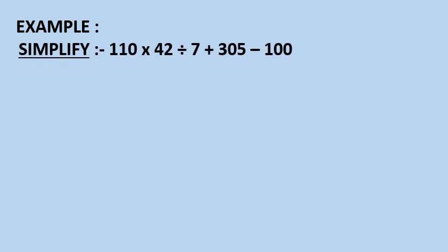Let's take an example. Simplify the question: 110 multiply by 42 divide by 7 plus 305 minus 100. In this question, we have all the four operations — addition, subtraction, multiplication, and division.